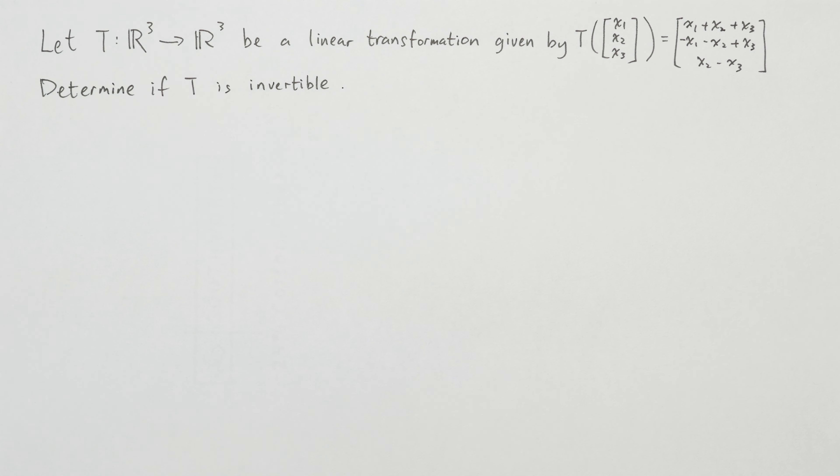Let T be a linear transformation from R³ to R³ as shown here. We want to determine if T is invertible. First, we rewrite T as follows.